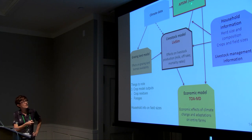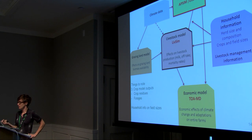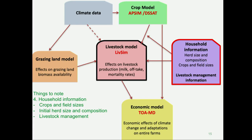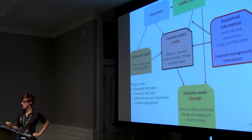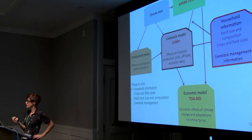There is an obvious link from crop models to the livestock model because we need information on feed — crop residues, forages, etc. As livestock modelers, we are not interested in crop yields per se; we want to know fodder availability at the farm level, so we need information on field sizes. We also need information on herd size, composition, and livestock management of these different households.